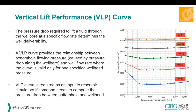The pressure drop required to lift the fluid through the wellbore at a specific rate determines the well deliverability. The vertical lift performance or VLP curve provides a relationship between bottom hole flowing pressure — caused by the pressure drop along the wellbore — and the well flow rate, where such a curve is valid only for one specified wellhead pressure. As you can see from the picture on the right, the VLP is a plot of bottom hole pressure on the y-axis versus flow rates on the x-axis, and each VLP has been generated for a specific wellhead pressure.